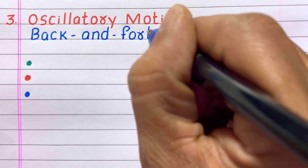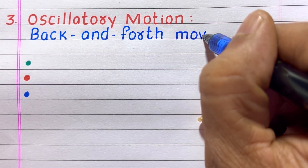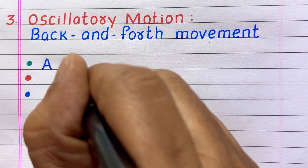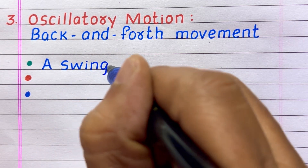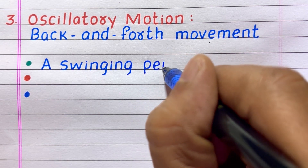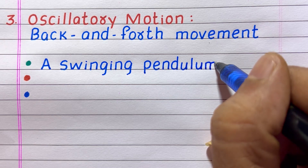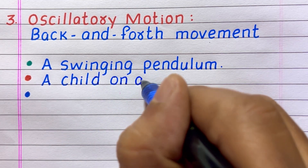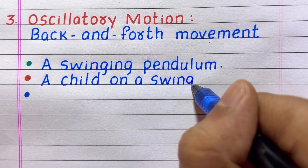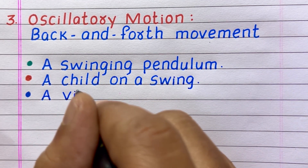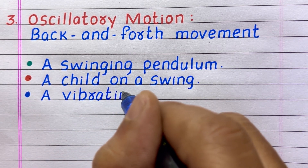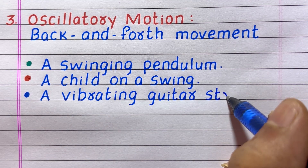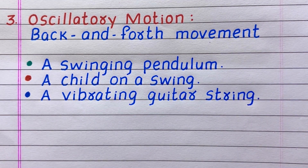The third type of motion is oscillatory motion. Back and forth movement of an object is called oscillatory motion. Examples: first, a swinging pendulum; second, a child on a swing; third, a vibrating guitar string.